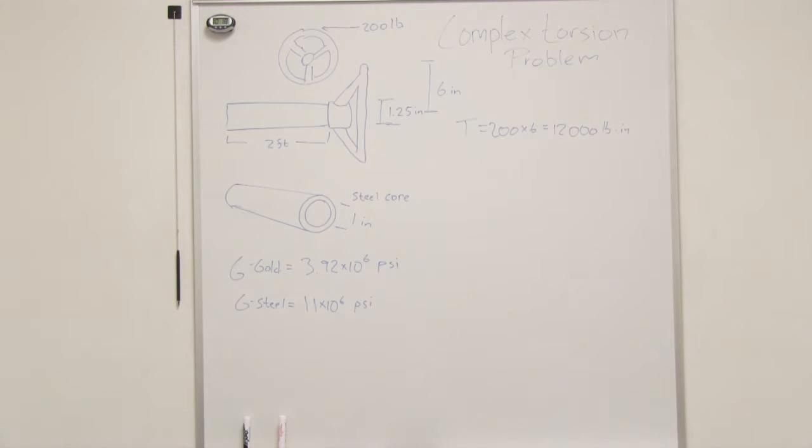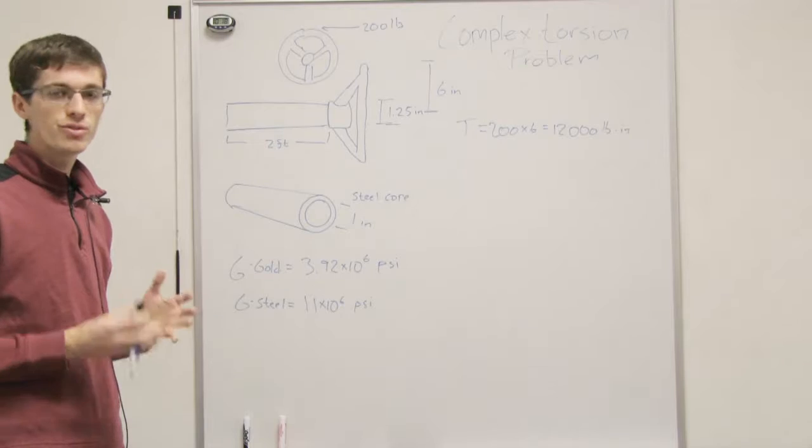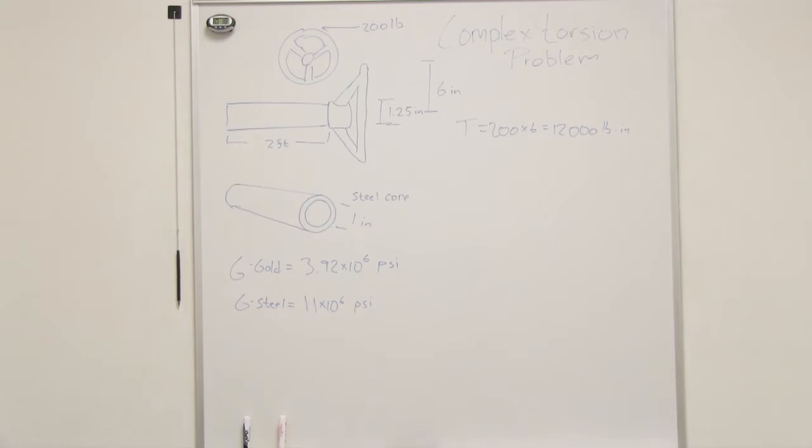This is where it gets a little bit complicated, since we have a steel core on the inside, it's not a uniform material, which means we have two different Gs, we have different stuff going on, and so it's weird trying to figure out exactly what's happening.